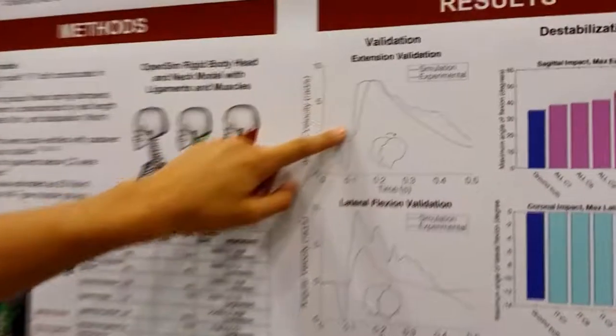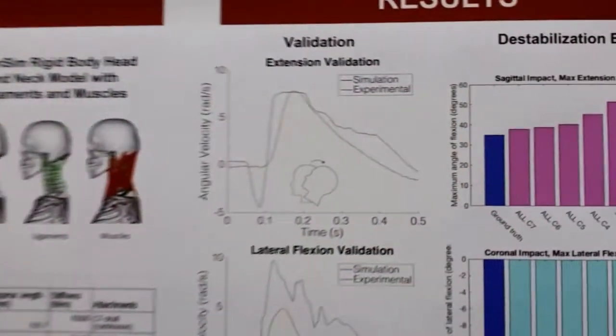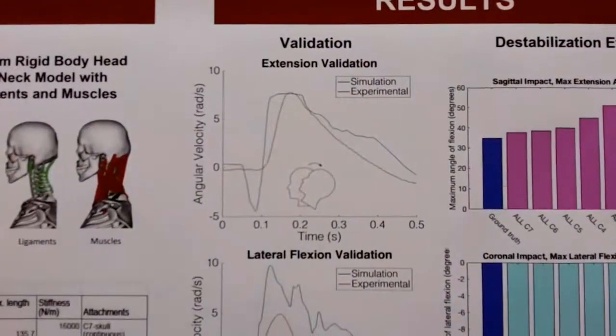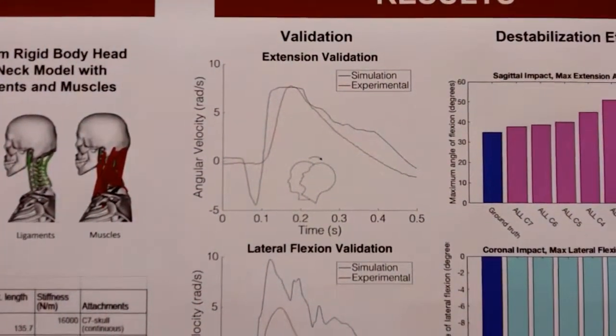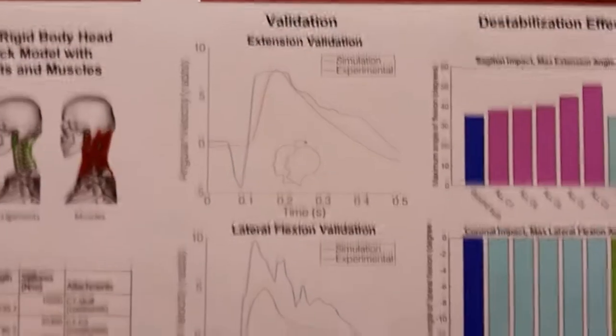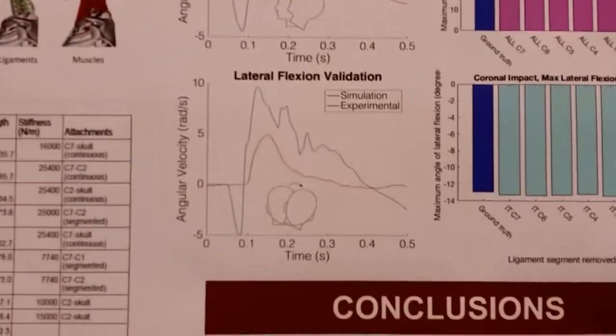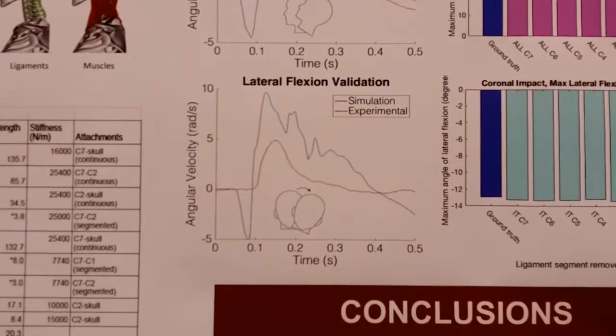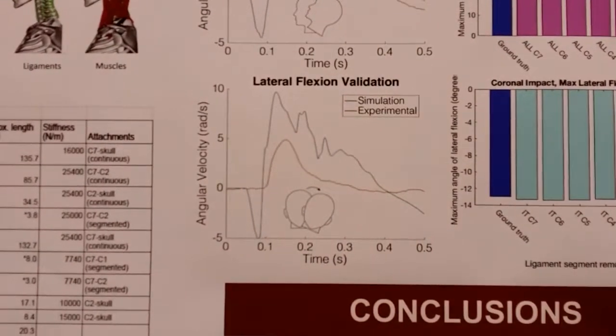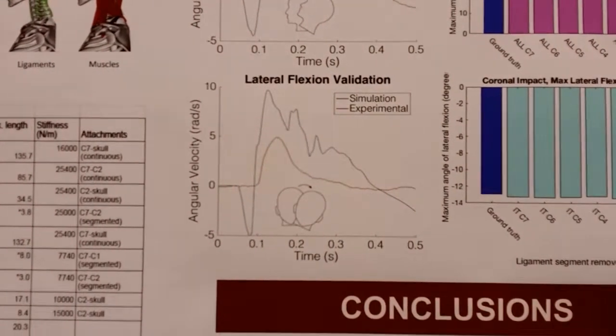Especially with extension, the model behaves very much how we would expect. And pretty well also with lateral flexion, although it over-predicts slightly the angular velocity.